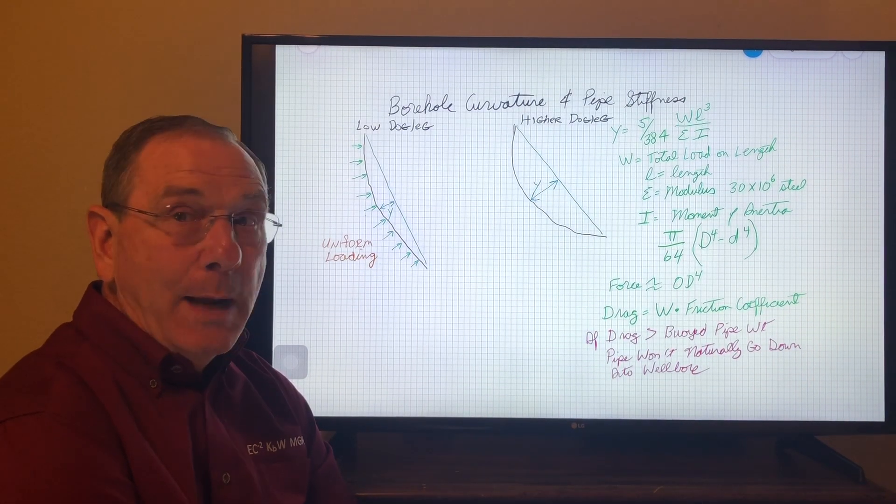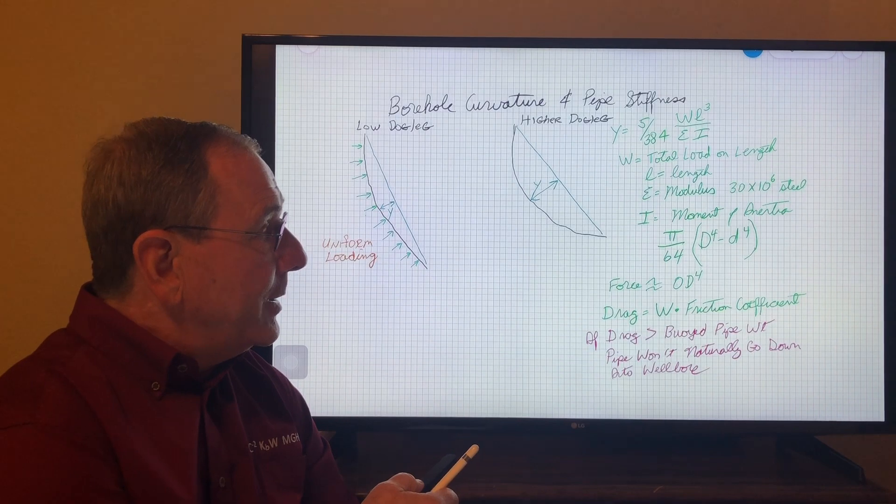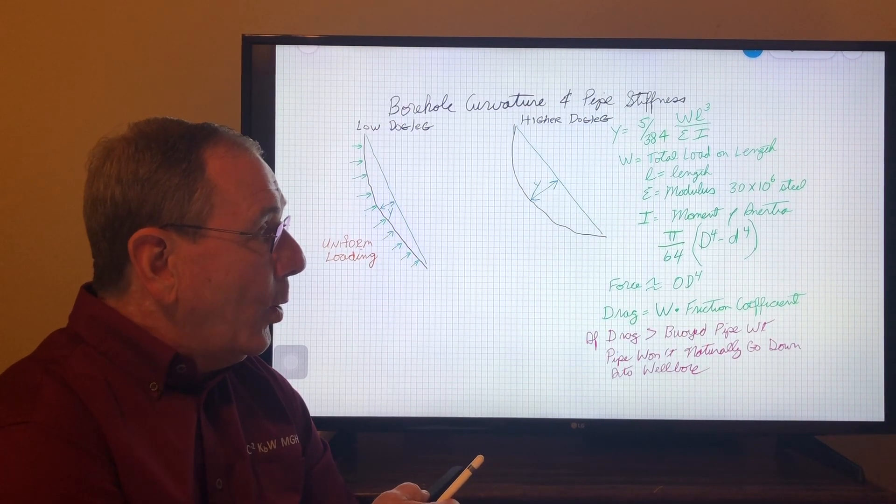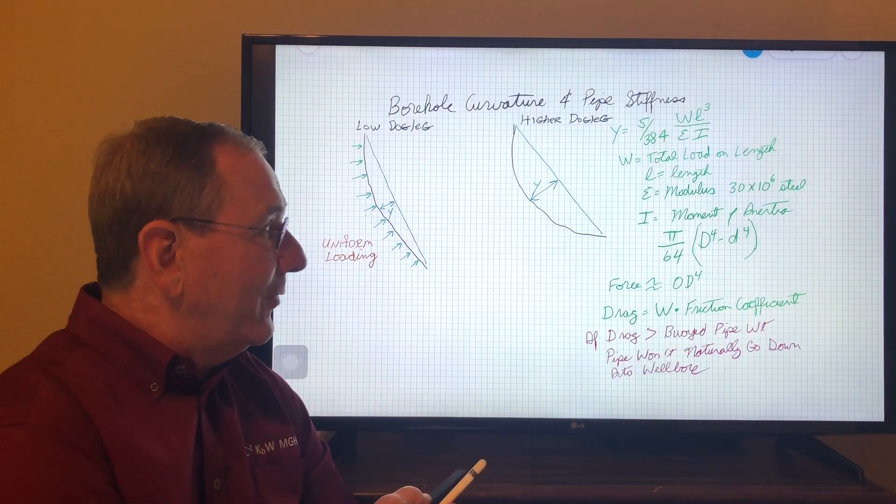The moment of inertia for pipe can be calculated as pi over 64 times the OD to the fourth minus the ID to the fourth.